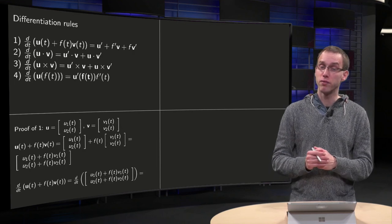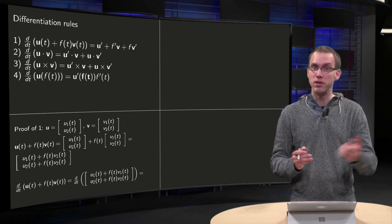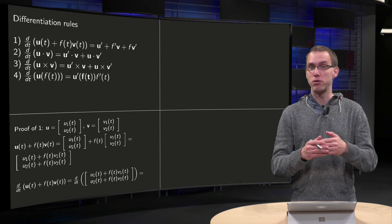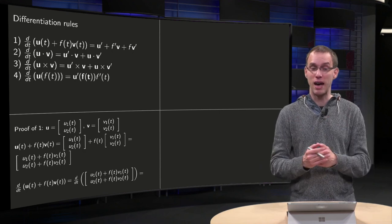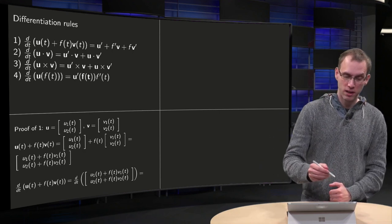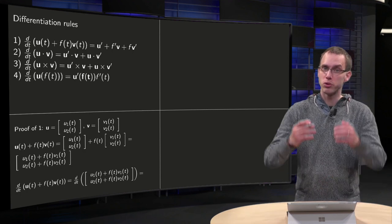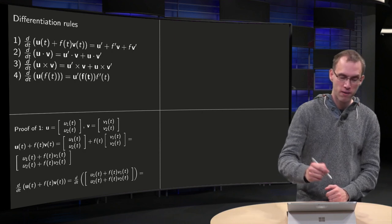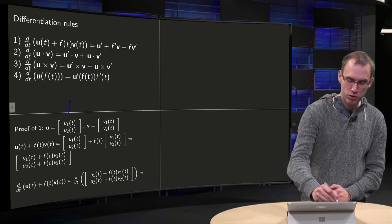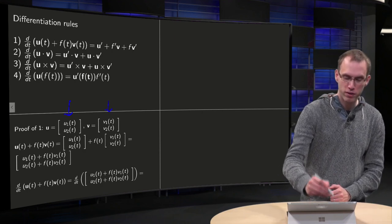So let's prove the first one, for example. Then you can try to prove the other ones yourself. Follow the same method, you just have to write everything out. So let's do it for the case of R2, because otherwise we just get more and more notation. So we write u equals (u1, u2) and v equals (v1, v2).